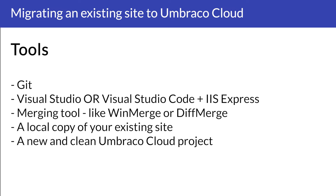Let's now have a look at the tools that you need to have to be able to migrate your Umbraco on-premise site to Umbraco Cloud. First of all, you need to have Git installed on your computer. You also need to have a code editor like Visual Studio or Visual Studio Code with IIS Express. You also need a merging tool like WinMerge or DivMerge. You also need a local copy of your existing site, as well as a new and clean Umbraco Cloud project with at least two environments.